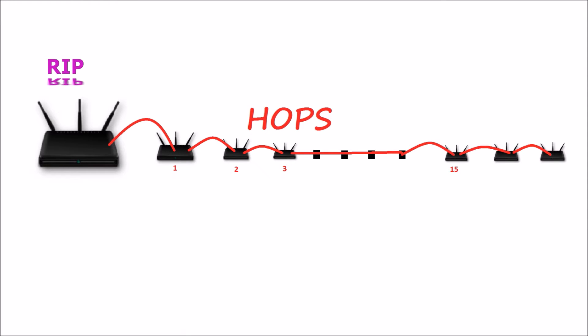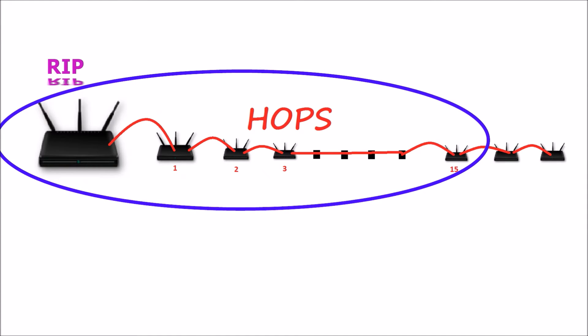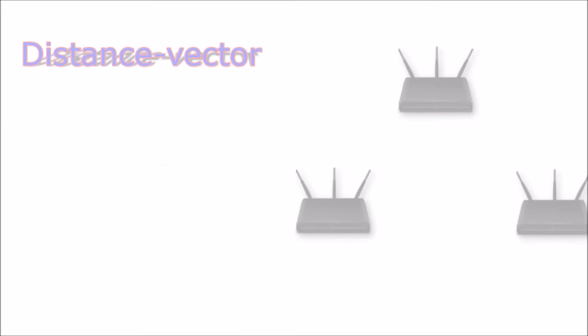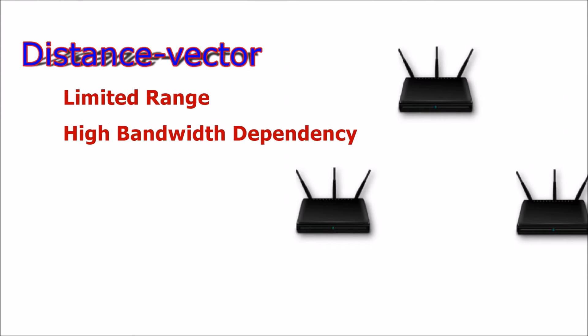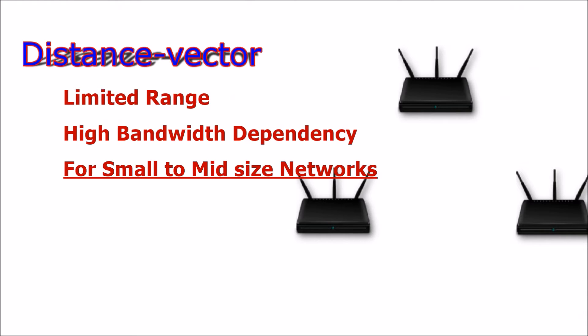It is also notable that protocols like RIP can only communicate with routers within a distance of 15 hops. Any routers beyond 15 hops are unknown to RIP. With their limited range and high dependency on bandwidth, distance vector routing protocols are more suitable for small to mid-sized networks.